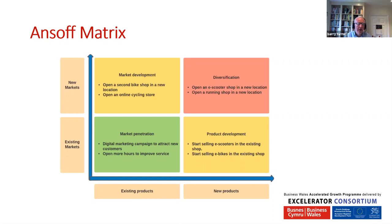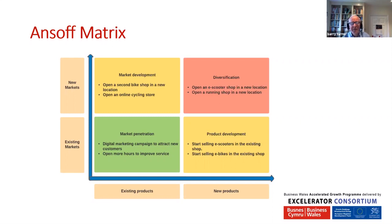Still on the same side of the chart, the top-left yellow square is where we take existing products to new markets — Ansoff called this Market Development. This is where you look for new types of clients: a new location, new geography, or new vertical market. For the bike shop, it would be opening a second shop in a new location or an online cycling store. In terms of probability of success, this is the second most likely to succeed — the risk is slightly higher than market penetration, but because it's products you're familiar with, your probability of success is still very good.